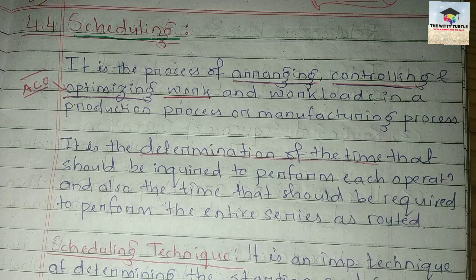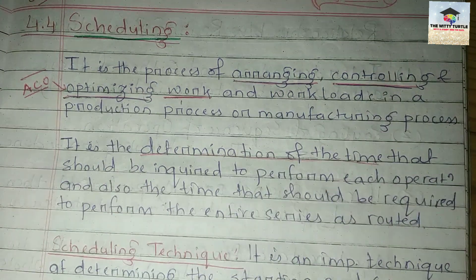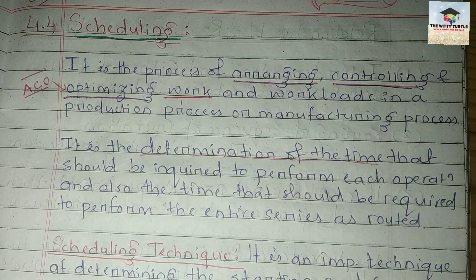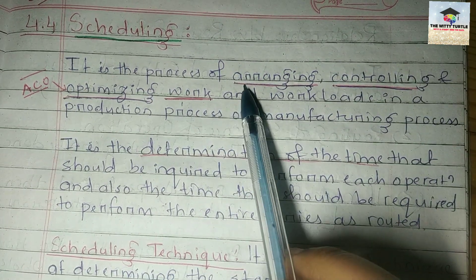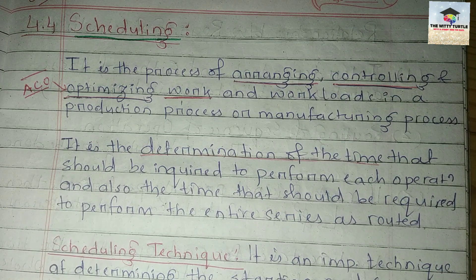What do we generally mean by scheduling? Like when we plan our day — from 9 to 11 I'll study direct taxation, from 2 to 5 I'll do costing — that is scheduling. Similarly, in a manufacturing unit they also do the arrangement, controlling, and optimization of the entire workload. The three keywords to remember are: arranging, controlling, and optimizing. You arrange the work, control whether it is being performed in a particular manner, and check whether it is being done optimally.